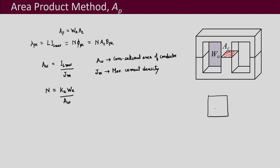This expression for N comes from the fact that the window area is WA, but only a part of it — Ku × WA — can actually be filled due to the various factors discussed. Dividing this available window area by the conductor cross-sectional area AW gives the number of turns N that can be placed inside the window.